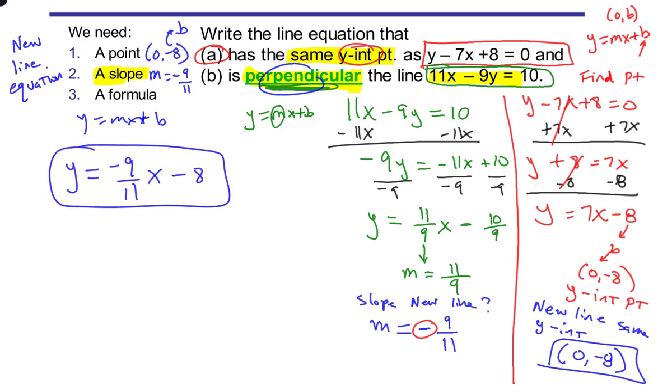That blue equation is our equation. Notice, it's going to have the same y-intercept. Look at that minus 8 and minus 8. So the blue equation is going to intersect the red equation at the same y-intercept point. Look at the slope. The slope is negative 9 elevenths. That is the negative reciprocal slope of the green one. So the blue one will be perpendicular to the green one. This is actually something you could check and test. If you graph the blue one, the green one, the red one in Desmos, you would see all those relationships coming together. So we're done. We got the equation of that line.